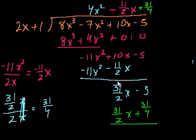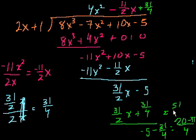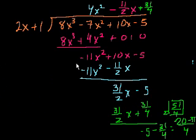We subtract the latest expression. When you subtract 31 over 2x from 31 over 2x, you're left with 0. And we're left with minus 5 minus 31 over 4. That's minus 20 over 4 minus 31 over 4, which equals minus 51 over 4. So our answer is: 2x plus 1 goes into 8x to the third minus 7x squared plus 10x minus 5 a total of 4x squared minus 11 halves x plus 31 over 4 times, with a remainder of minus 51 over 4.